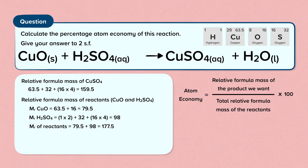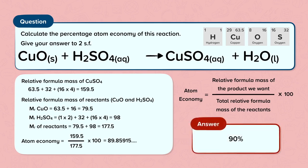Now we can calculate the atom economy. The atom economy is 159.5 — the relative formula mass of copper sulfate — divided by 177.5, the total relative formula mass of the reactants, times 100. This gives a long decimal: 89.85915 and on. The question asked for two significant figures, so we round this up. The atom economy of this reaction is 90%.